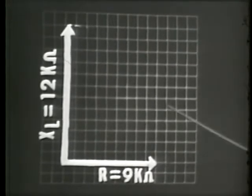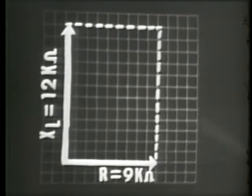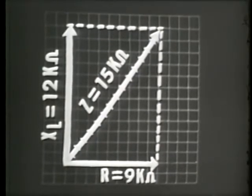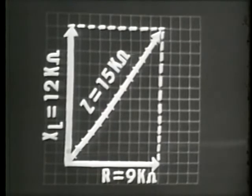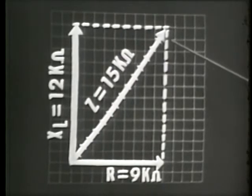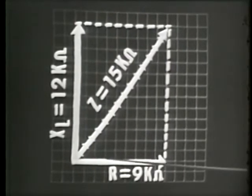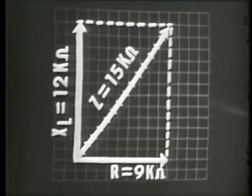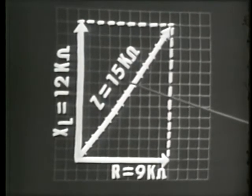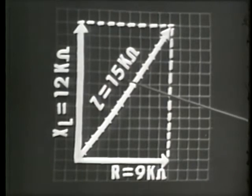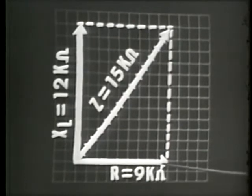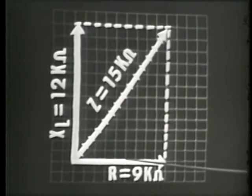To find the total opposition, we construct a parallelogram and then connect these two corners. With the same unit of measure used for constructing our R and XL vectors, we measure the physical length of the resultant vector. This resultant vector represents the vector sum of R and XL and is the total opposition in our circuit. In our example, we have 15 units or 15K ohms of impedance.